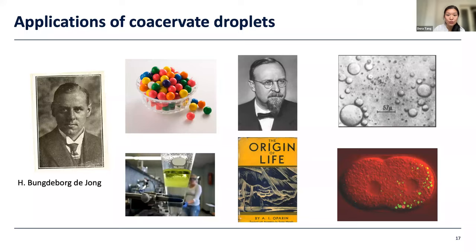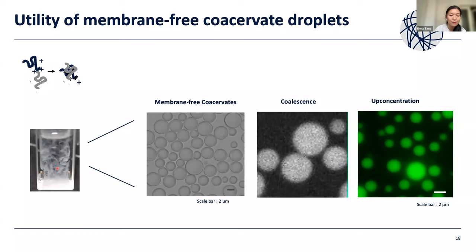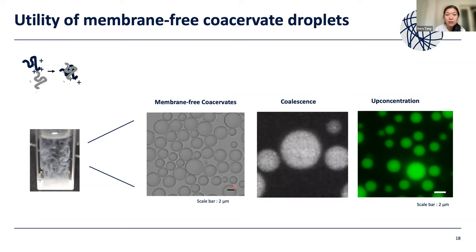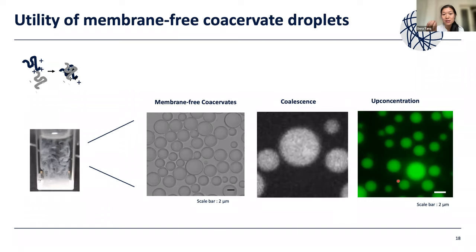When we take these oppositely charged components and mix them in the lab, they form a turbid solution. Under the microscope we see these membrane-free droplets. They have the ability to coalesce — they come together, merge, and keep continually merging until you form a giant macromolecular phase. As indicated by their applications in industry, they have this ability to up-concentrate. This image here on the right shows a dispersion of coacervate droplets where we put in fluorophores, and you can see they've all been sucked up inside. In terms of enzyme reactions, this ability to up-concentrate can potentially increase rates of reaction.